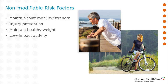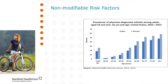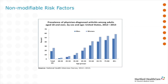Unfortunately, some risk factors for osteoarthritis are not modifiable. These include age, female gender, and even genetics. This data shows there is an increase in the percentage of patients with osteoarthritis as patient age increases, and it also shows that there's a greater percentage of arthritis in females at each age group.